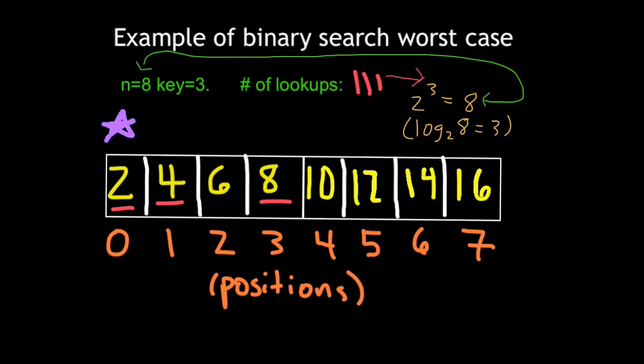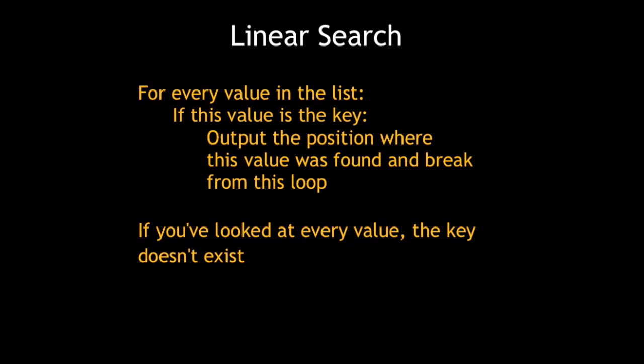The alternative to binary search is linear search, where you look at every single value in the list until you find the key that you're looking for. In the worst case, when the key does not exist in the list, linear search will run at O of n because it will look at all n values in the list.